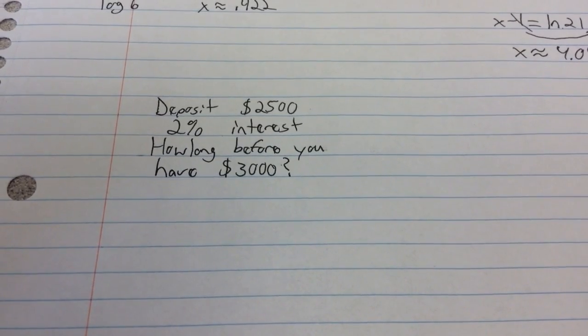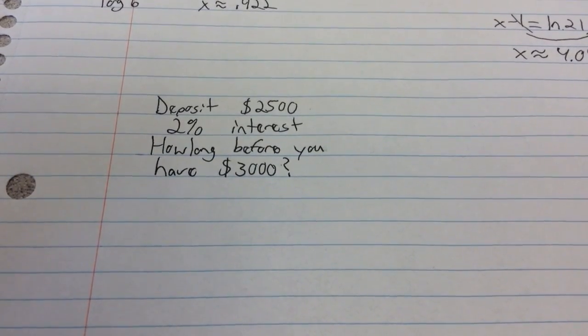It says if you deposit $2,500 into 2% interest, how long before you have $3,000?